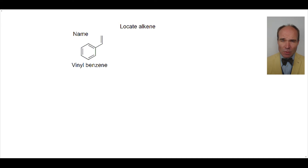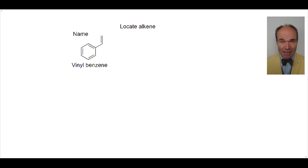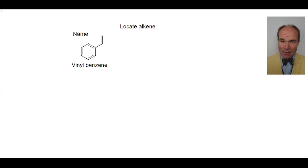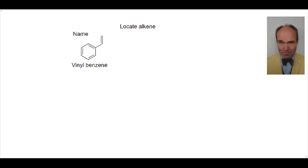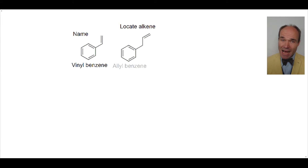Now we will consider the situation where there is a tetrahedral sp3 carbon in between the alkene and the other functional group. Here the alkene with the tetrahedral carbon attached is known as allyl, so the molecule here is allyl benzene.